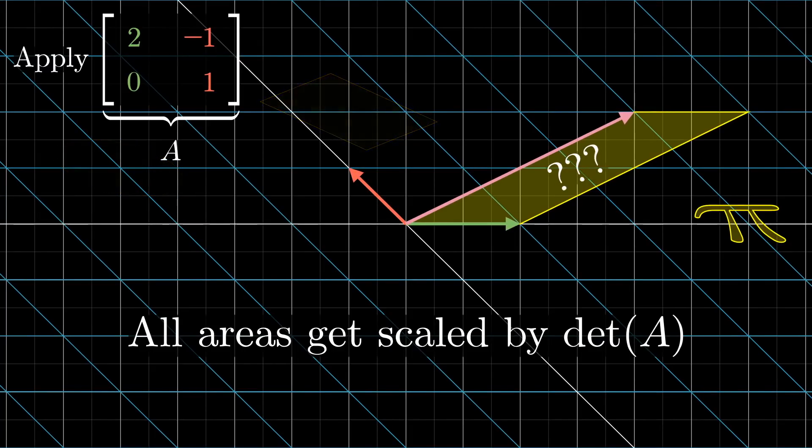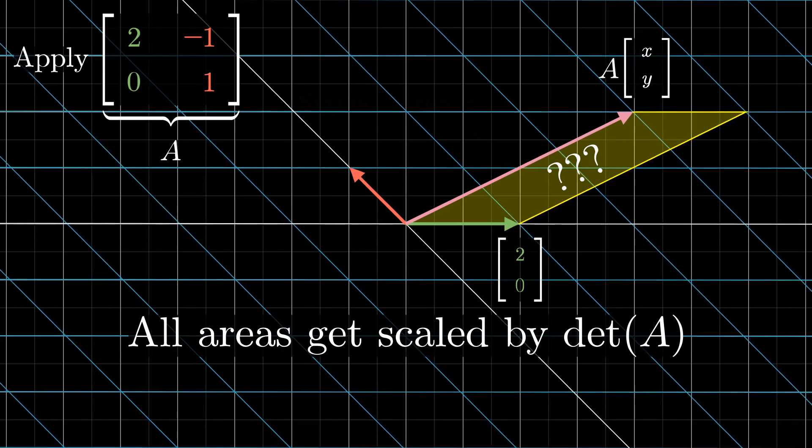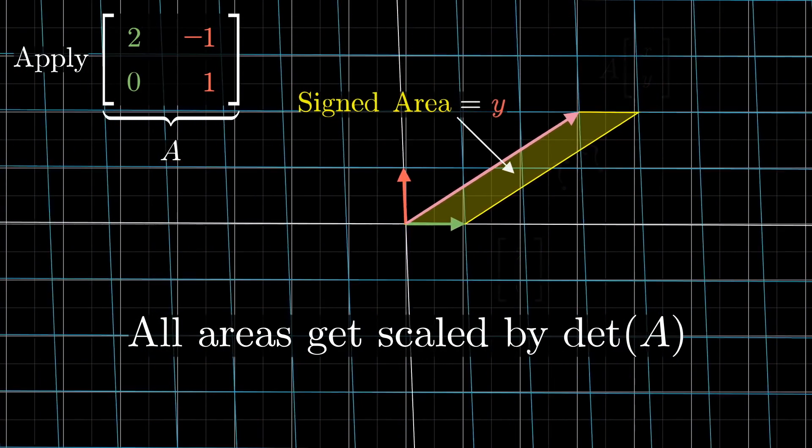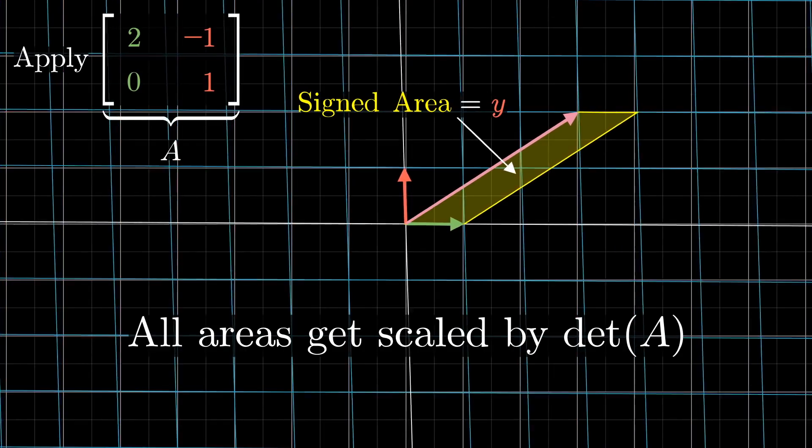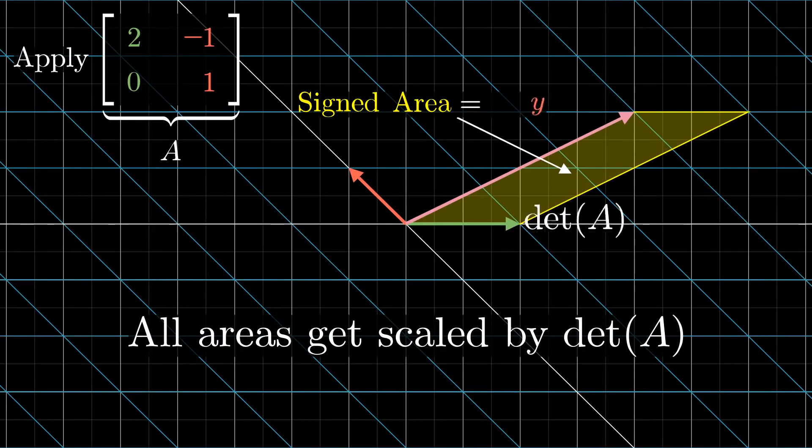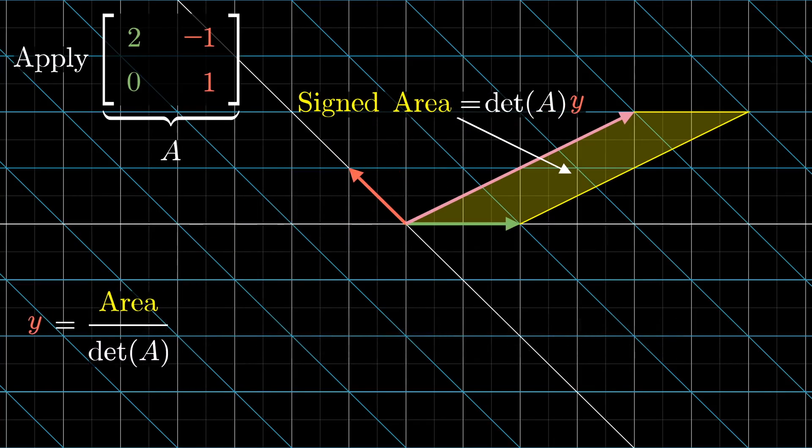For example, if you look at the parallelogram spanned by the vector where your first basis vector lands, which is the first column of the matrix, and the transformed version of xy, what is its area? Well, this is the transformed version of the parallelogram we were looking at earlier, the one whose area was the y-coordinate of the mystery input vector. So its area is just going to be the determinant of the transformation multiplied by that y-coordinate. So, that means we can solve for y by taking the area of this new parallelogram in the output space divided by the determinant of the full transformation.